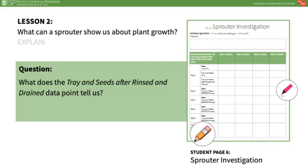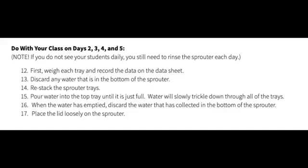After this discussion, collect student journals and remind students that they will need them each day for the next several days to record their observations. You may wish to replicate the sprouter data collection sheet found on student page 6 on a large piece of chart paper or electronically, so that you can model the data recording process for students. Be sure that students are recording their observations of the seeds in each tray, as well as the data from weighing the trays. They can draw simple pictures or take notes on student page 7 of their science journals. Each day, follow steps 12–17 on the sprouter setup and maintenance instructions found on teacher page 4, and record the data. Discuss what the data could mean.